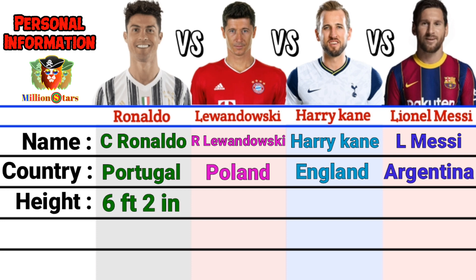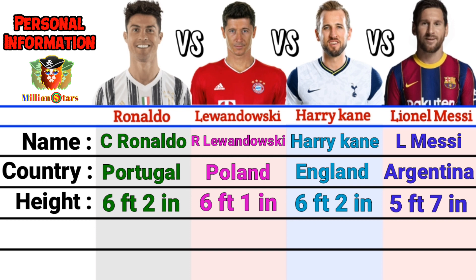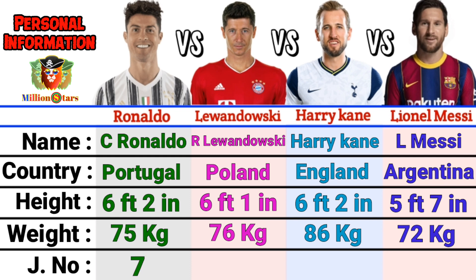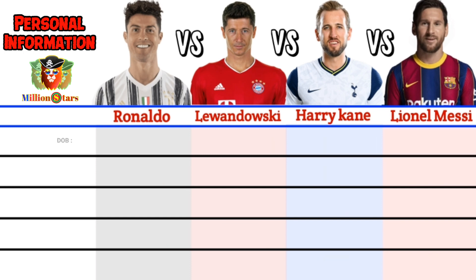Height: Ronaldo 6 feet 2 inches, Lewandowski 6 feet 1 inch, Harry Kane 6 feet 2 inches, Lionel Messi 5 feet 7 inches. Weight: Ronaldo 75 kg, Lewandowski 76 kg, Harry Kane 86 kg, Lionel Messi 72 kg. Jersey number: Ronaldo 7, Lewandowski 9, Harry Kane 10, Messi 10.